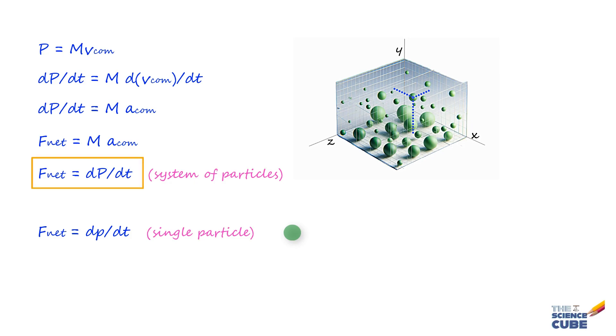The way you would read this equation would be quite similar to the way you would read for a single particle. That is, the net external force F_net on a system of particles causes linear momentum P of the system to change.